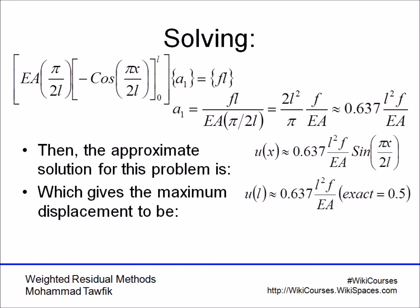The subdomain is, in most cases, more accurate than the collocation method. We have here 0.637 L squared F over EA, while for the strain, you got the exact value.